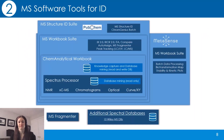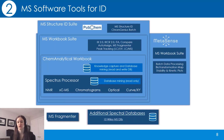Now that we hopefully have a good method, we can look at the second area of importance: impurity identification. There are several software tools that can aid in this, including tools that help in determining the best formula for an accurate mass, tools that can predict fragmentation — such as the MS Fragmentor tool shown in the bottom left — or tools that search databases for things that have similar spectra. We'll talk about a few of these tools over the next few minutes.